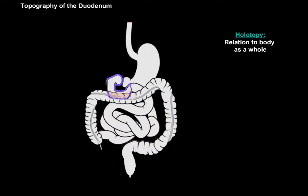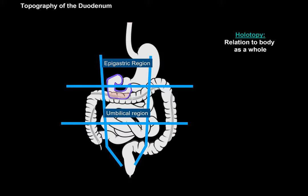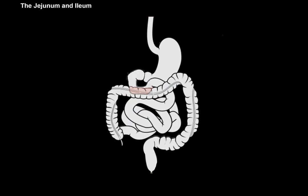Next we have the holotopy, meaning its relation to the body as a whole. The upper part of the duodenum is in the epigastric region, while the lower level is in the umbilical region. So that's the topography of the duodenum. Now let's do the next two parts of the small intestine, the jejunum and the ileum.